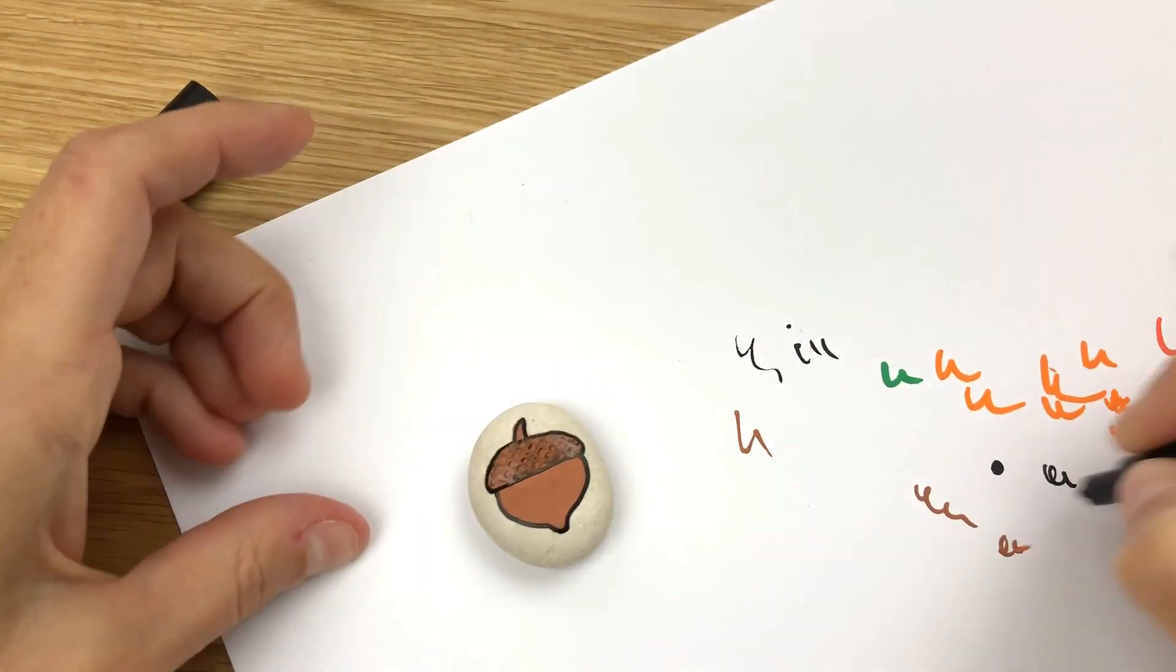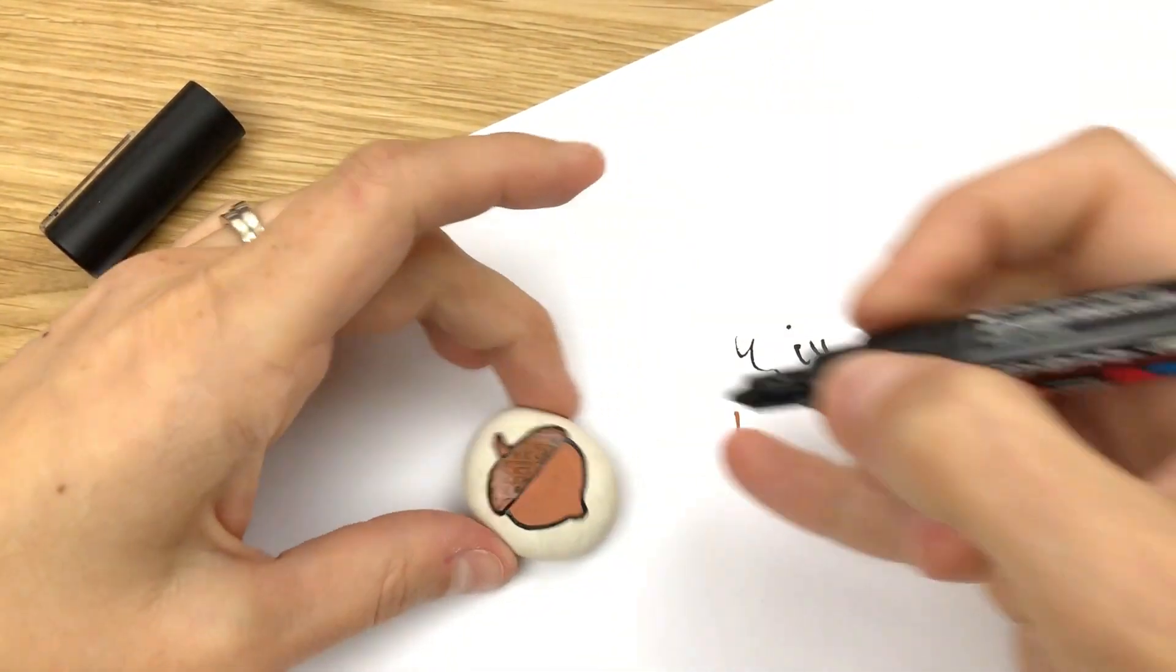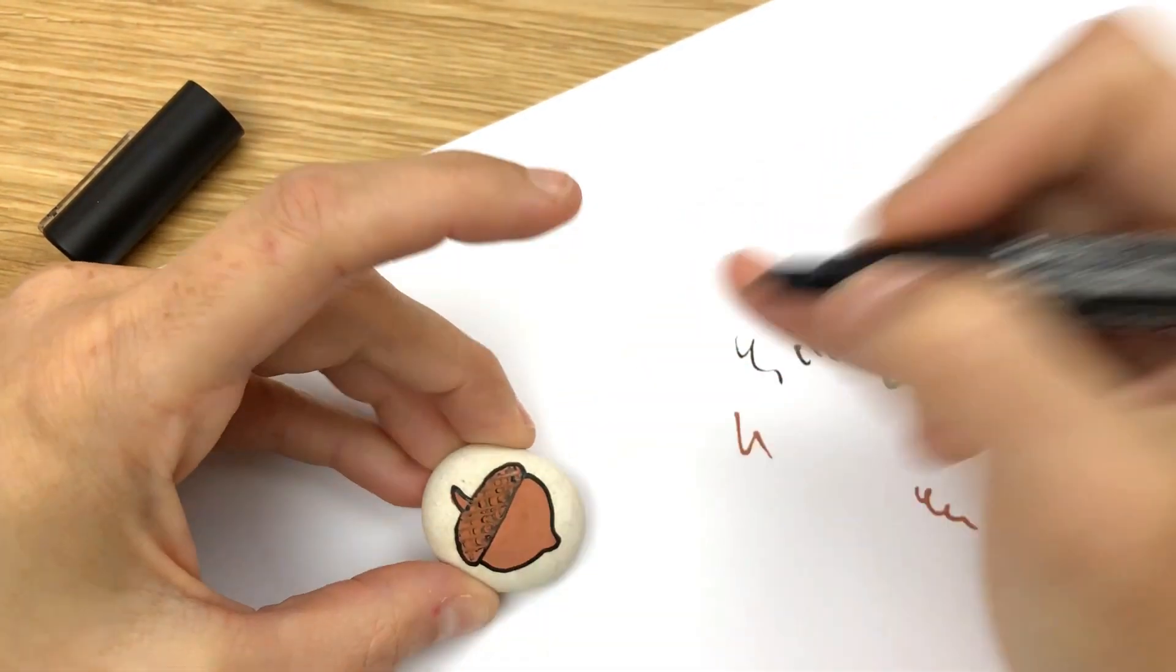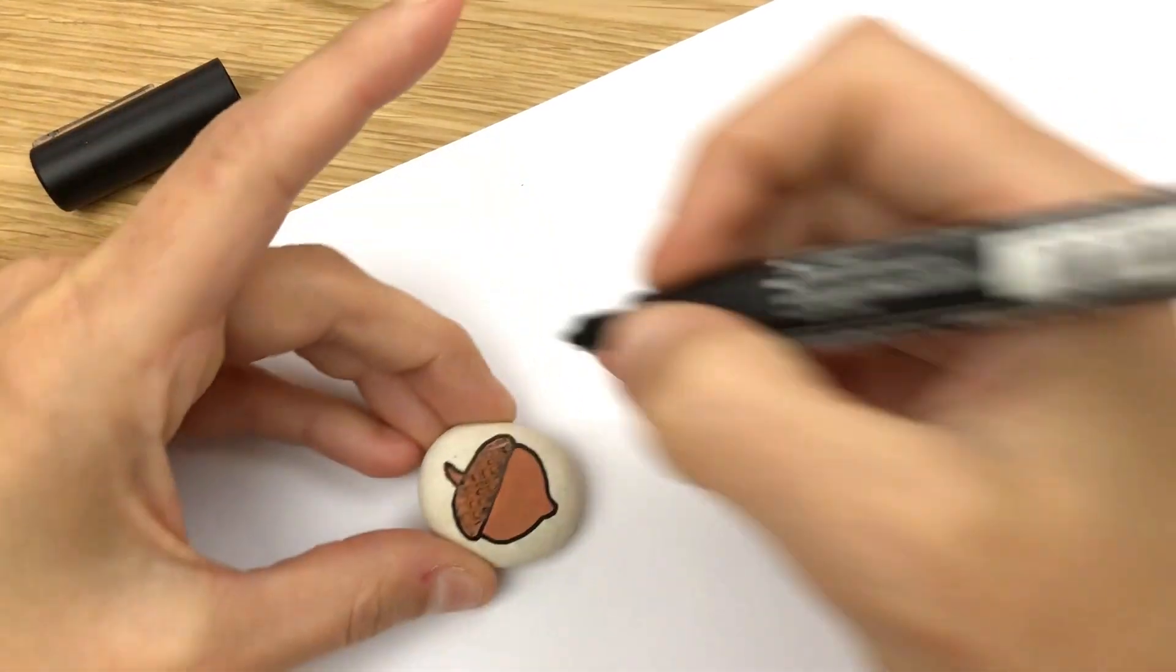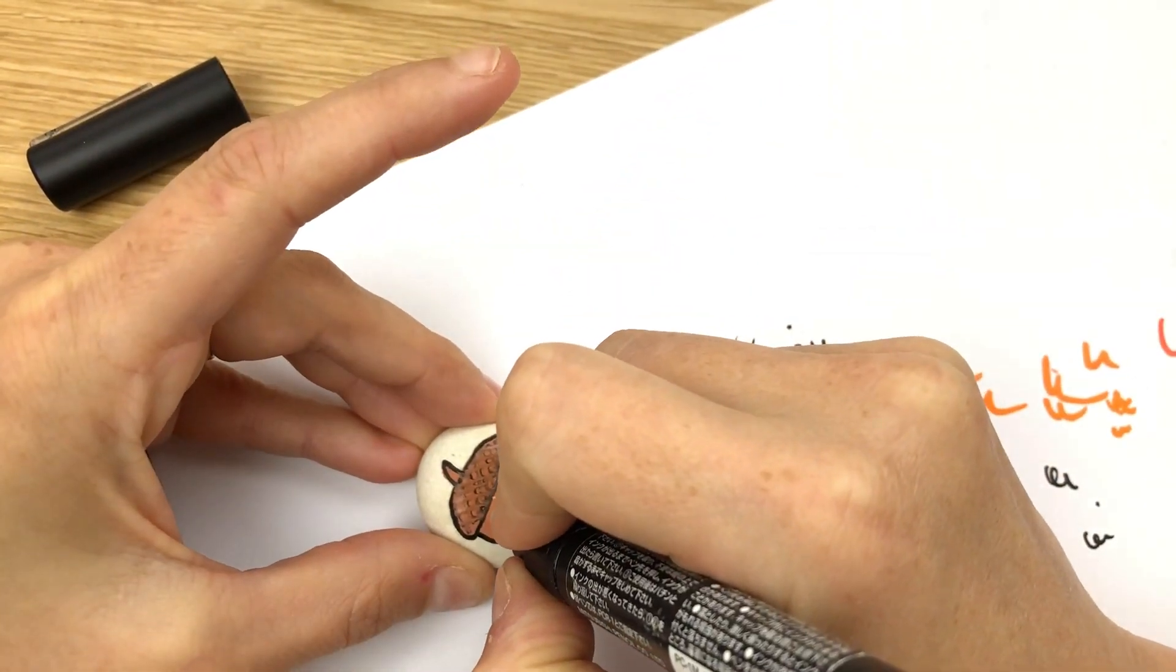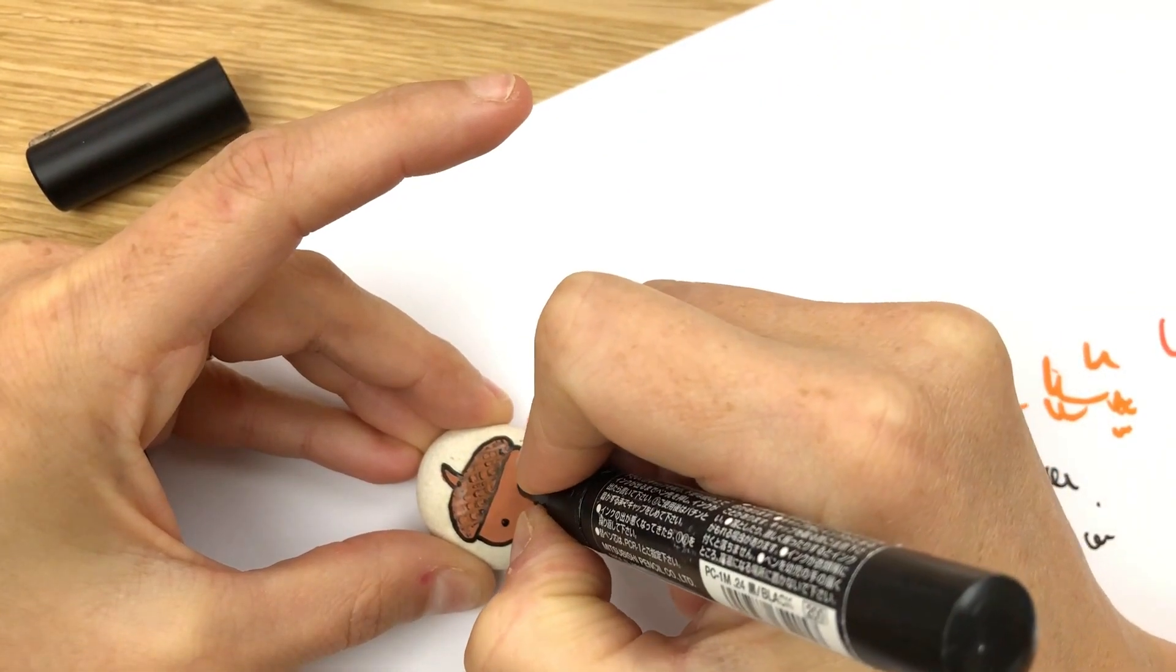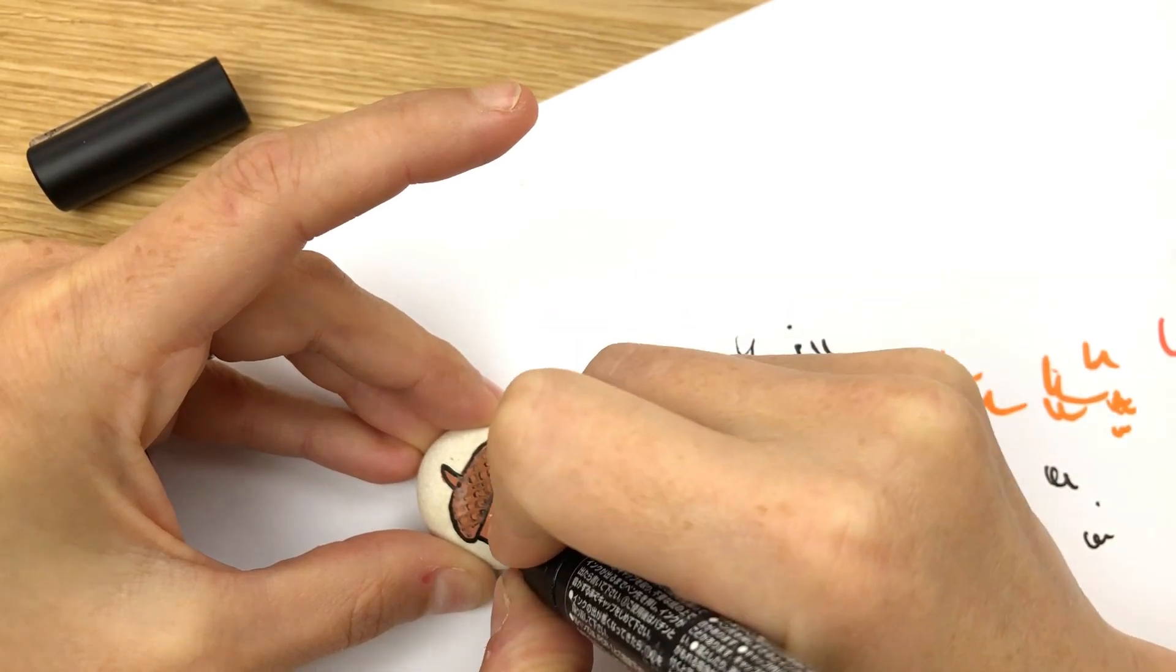Like so, and then I'm gonna make him cute because you know I like to. You could leave it just like this if you're doing something where you just want some fall decorations, but you know me, I like to give my things a little bit of personality.